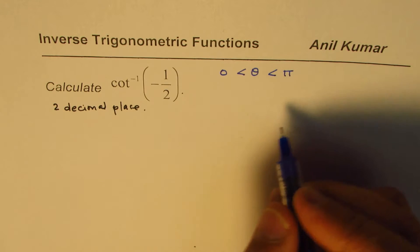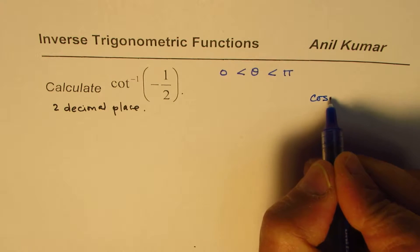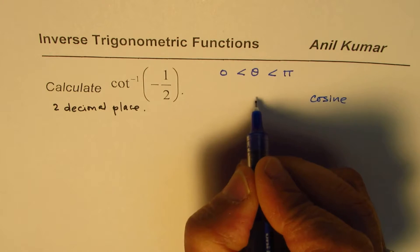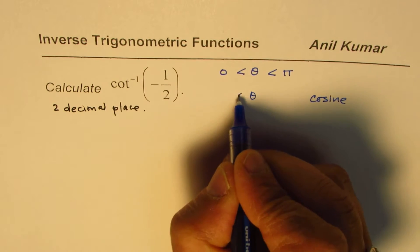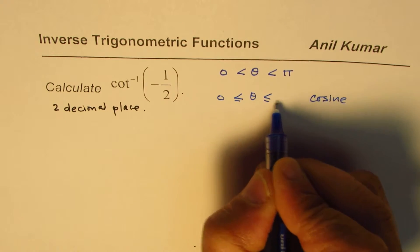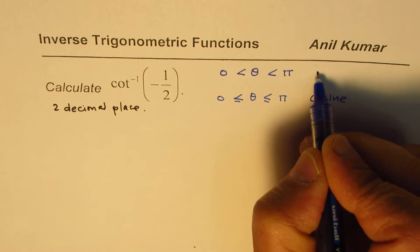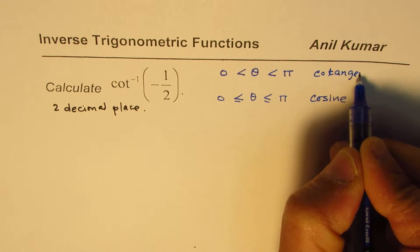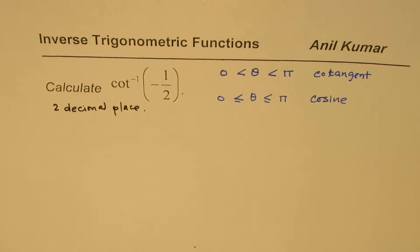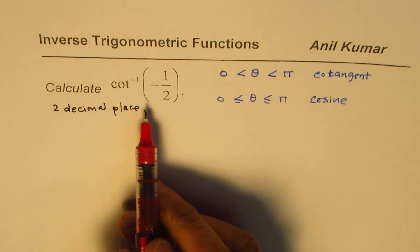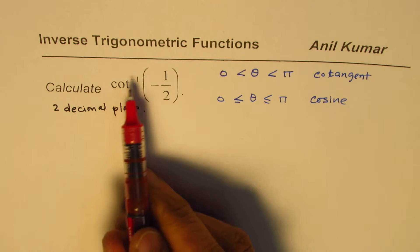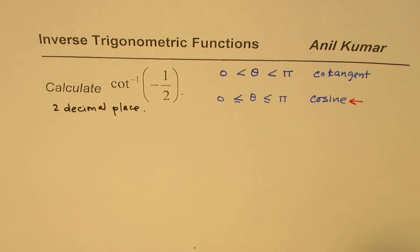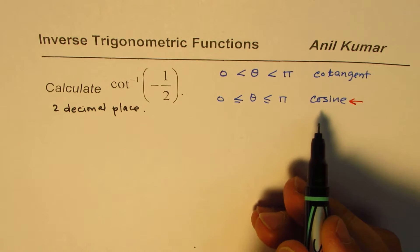We have cosine function, whose inverse is defined in the interval 0 to pi. So, this is for cotangent function. Therefore, to calculate the inverse of cotangent, we should use cosine from the calculator. That is the whole idea. Now, the second question is, how to write this in terms of cosine?